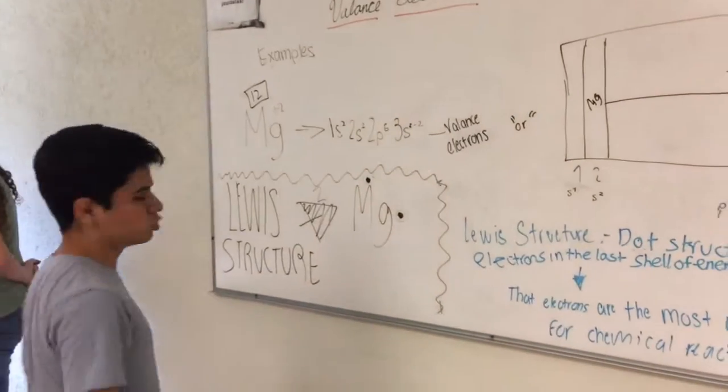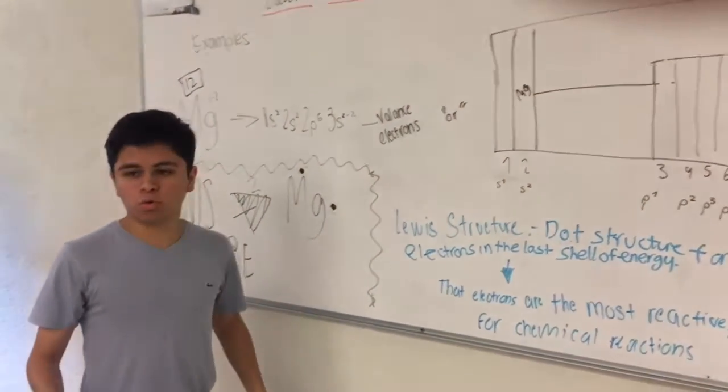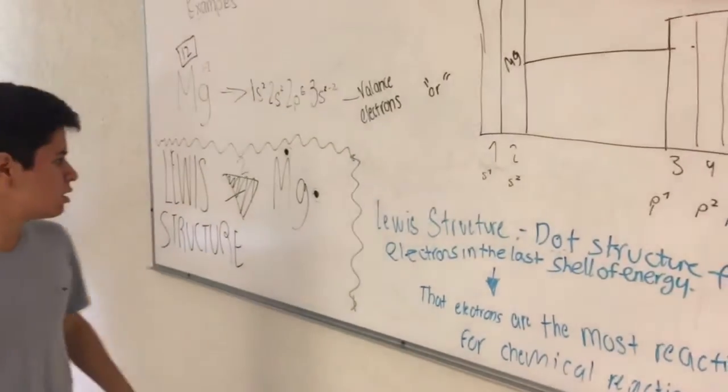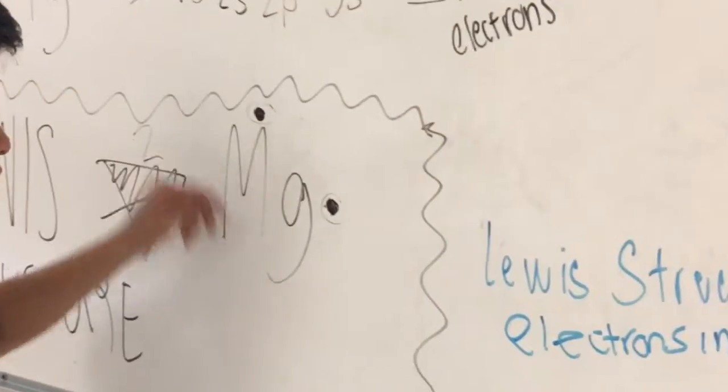Now we are going to talk about the Lewis Structure. To use Lewis Structure we need to get an element, any element. So for example, we are going to use Magnesium, Mg.